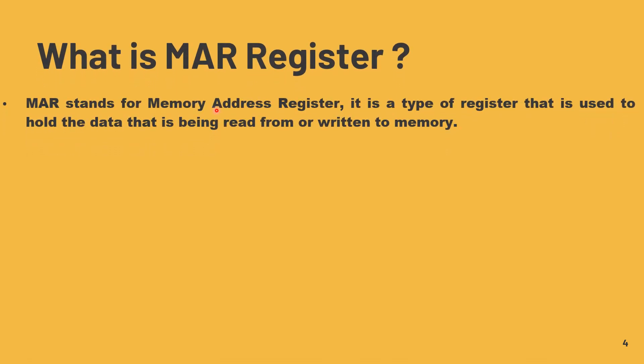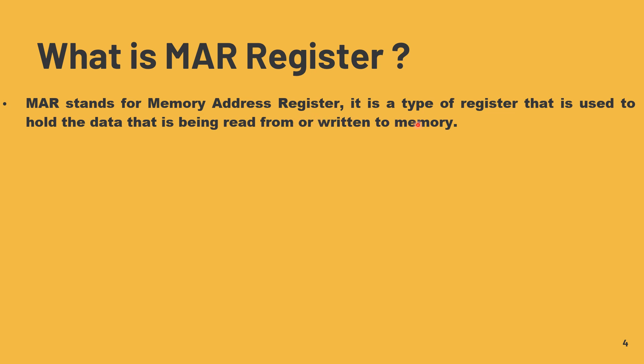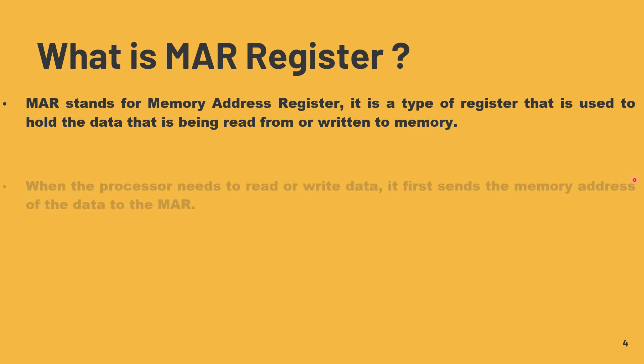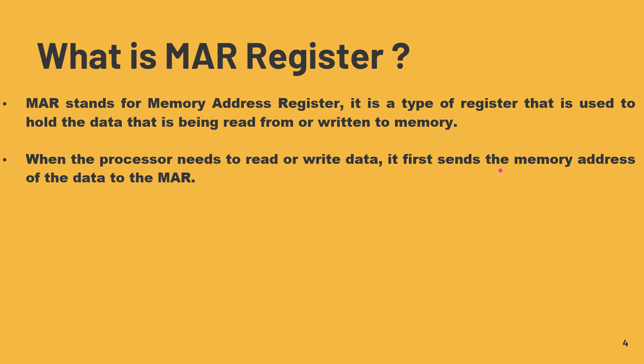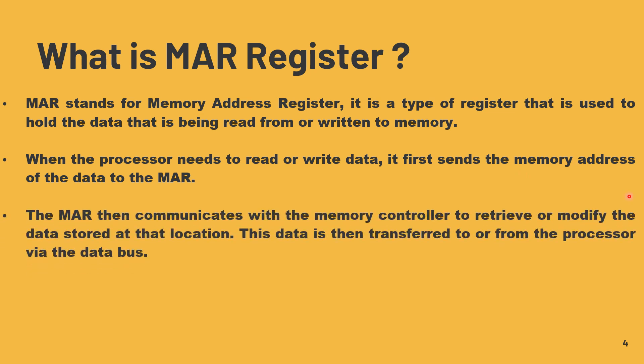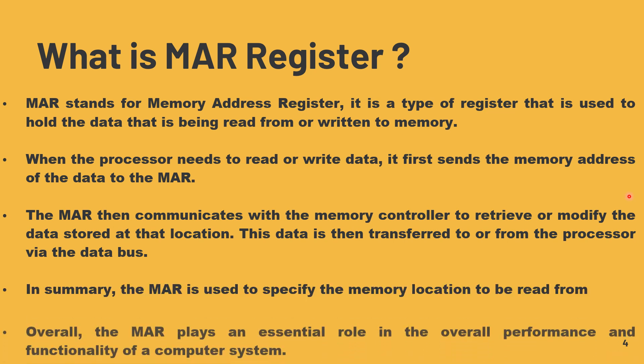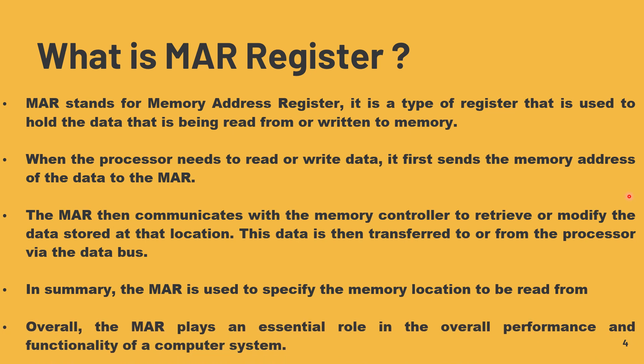What is the MAR register? MAR stands for memory address register. It is a type of register used to hold the address of the data that is being read from or written to memory. When the processor needs to read or write data, it first sends the memory address to the MAR. The MAR then communicates with the memory controller to retrieve or modify the data stored at that location. This data is then transferred to or from the processor via the data bus. In summary, MAR is used to specify the memory location to read from and plays an essential role in the overall performance and functionality of the computer system.